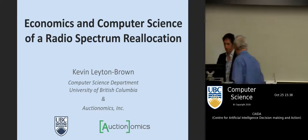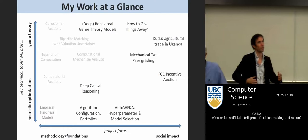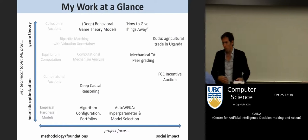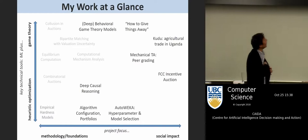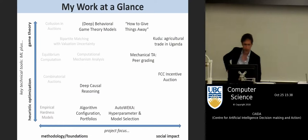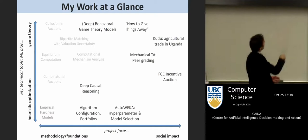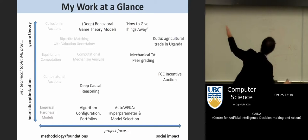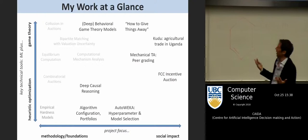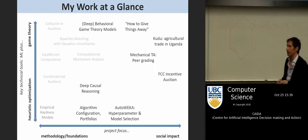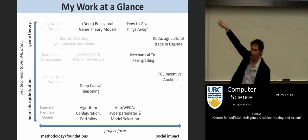Let me begin with one slide on what it is that I work on. Here's my work at a glance. On the x-axis, whether the project is focused on methodology foundations on the left to social impact problems on the right. On the y-axis, my key technical tools. These days pretty much everything I'm doing involves ML — ML plus heuristic optimization at the bottom, ML plus game theory at the top.